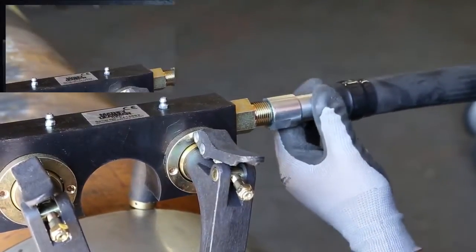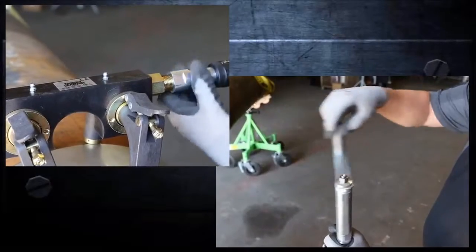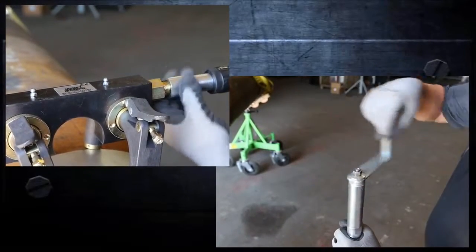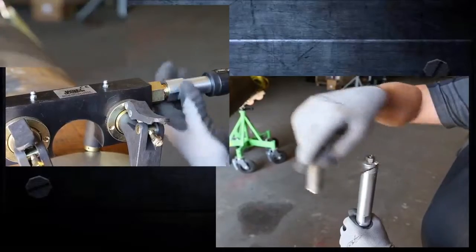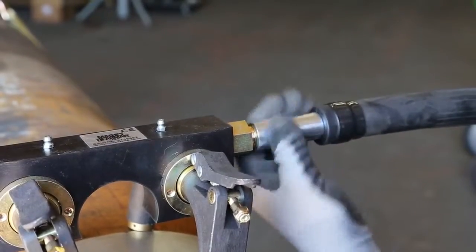Next, attach the flexible drive cable to the body of the crawler. To ensure proper engagement, have one person rotate the crank handle while another threads the flexible drive shaft into the body.